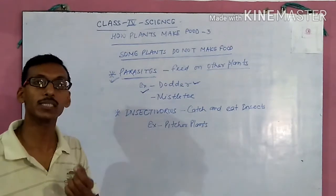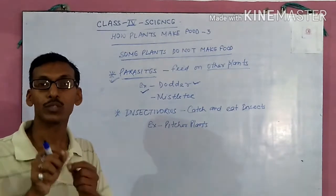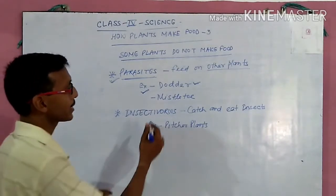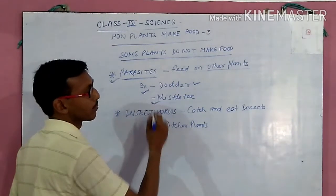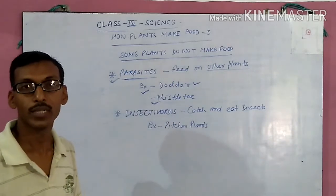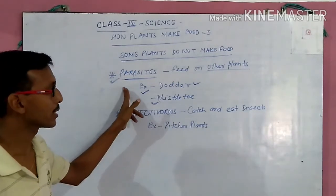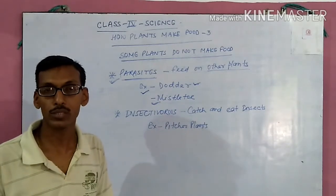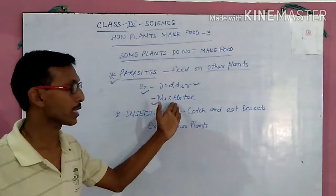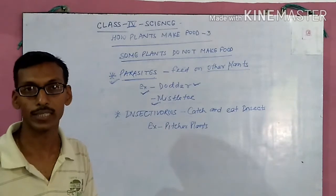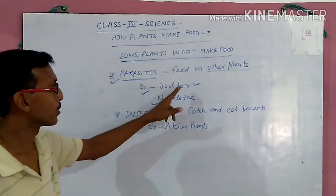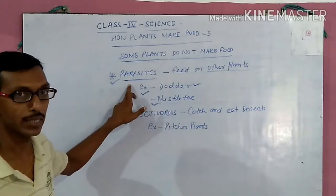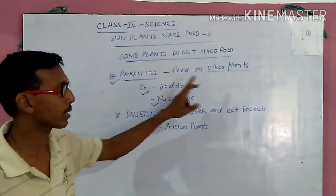They are connected with the help of other plants. The second example is Mistletoe. Mistletoe is also another parasite which grows on large trees like mangoes. It connects with those trees and takes its nutrition from them. So, dodder and Mistletoe are parasitic plants that cannot make their own food.